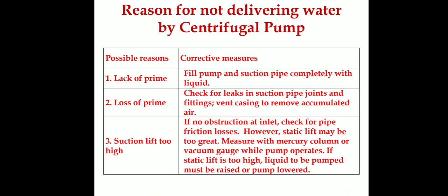Suction lift too high is another big problem. For a centrifugal pump, the suction height is optimized for around 6 meters. Exceeding this will reduce energy efficiency. We must adjust the height and level correctly.